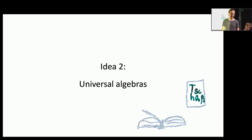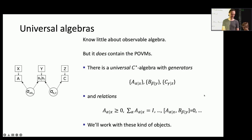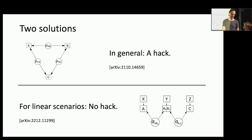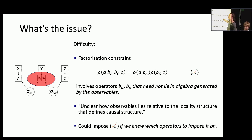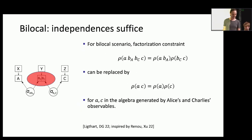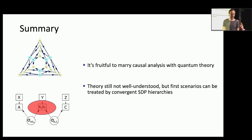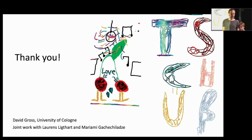Putting all the ideas together — universal algebraic, C*-algebraic, polynomial optimization, and von Neumann algebraic techniques — you arrive at the summary: it is very fruitful to marry causal analysis with quantum theory. There are many interesting problems, very little understood. If you want to leave your mark on the field, you can tackle problems nobody knows how to solve. First scenarios can now be treated by convergent SDP hierarchies. And with that I thank you — and these are two cherries in love with a disco ball, don't ask me why.